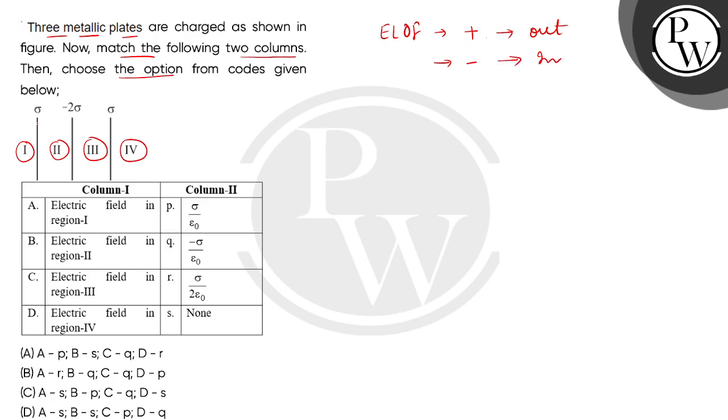So children, if we look at the first plate, the electric field will be outward. For second, the electric field will be inward. Then for third, the electric field will be outward.